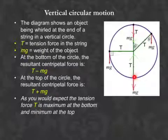And look at bottom first. When the object is here, there are two forces acting on it. One is its own weight, acting down or away from the center of the circle. One is a tension force of the string pulling up towards the center of the circle.